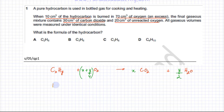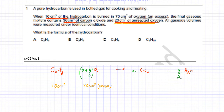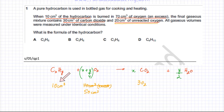We had 10 cm³ of unknown hydrocarbon reacting with 70 cm³ of oxygen in excess. Since 20 cm³ of unreacted oxygen remained, the oxygen actually reacting was 50 cm³. The final products include 30 cm³ of CO₂. So according to the volume ratio, 10 cm³ reacts with 50 cm³ and produces 30 cm³ of CO₂. Since mole ratio equals volume ratio, one mole of hydrocarbon reacts with five moles of O₂.